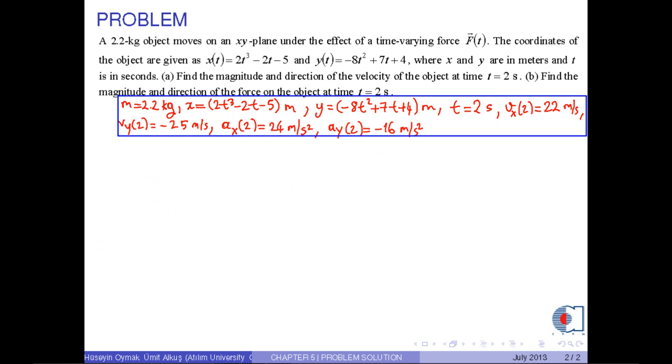Okay, we are ready to solve part A. In unit vector notation, velocity at t = 2 seconds can be expressed as vx(2) i hat plus vy(2) j hat. With the corresponding numerical values, we obtain 22 i hat - 25 j hat meters per second.